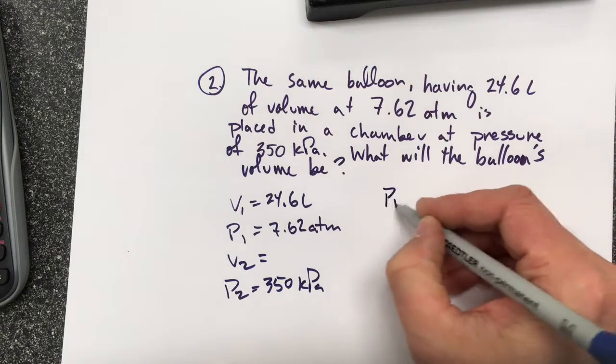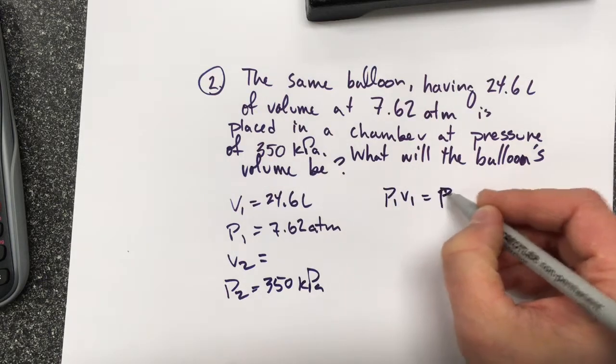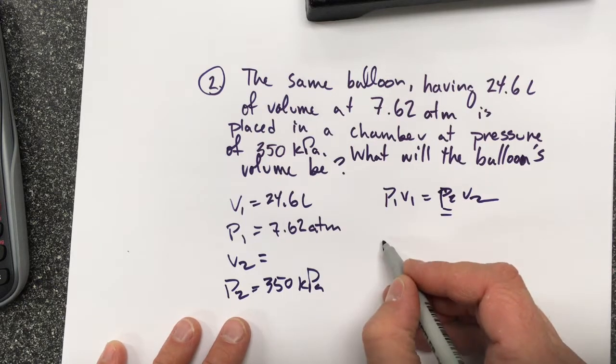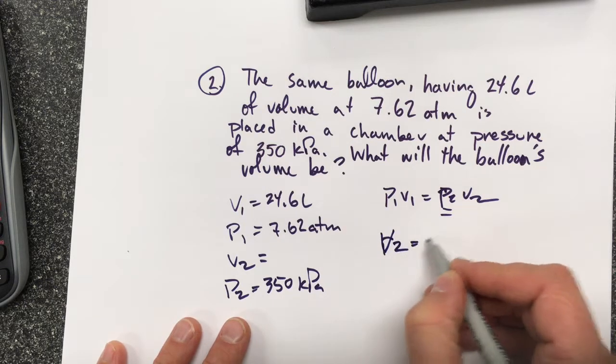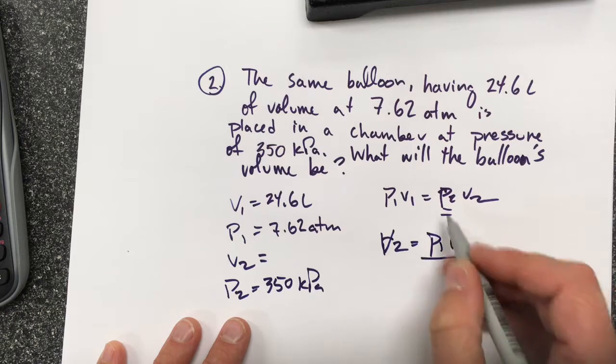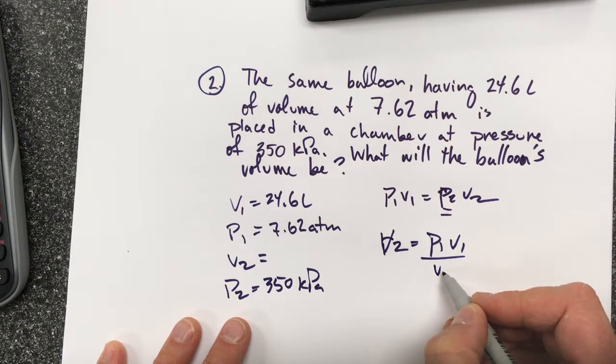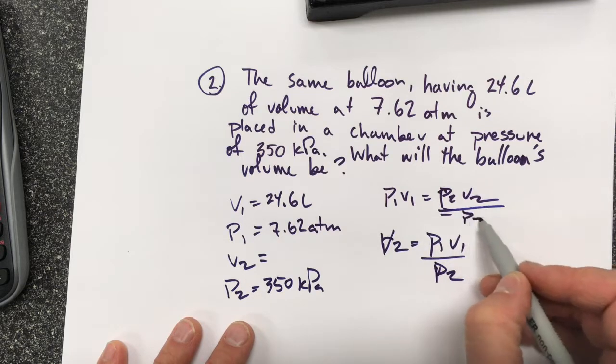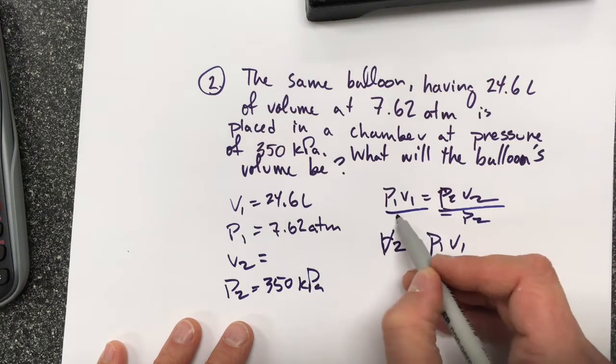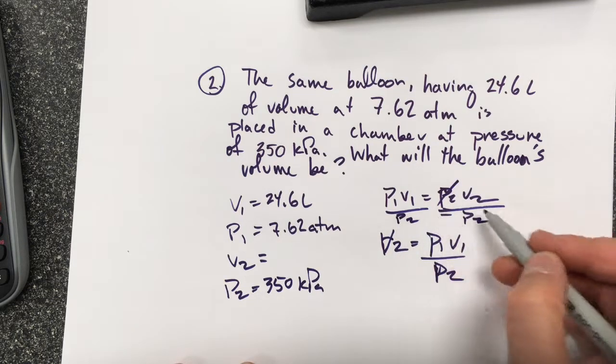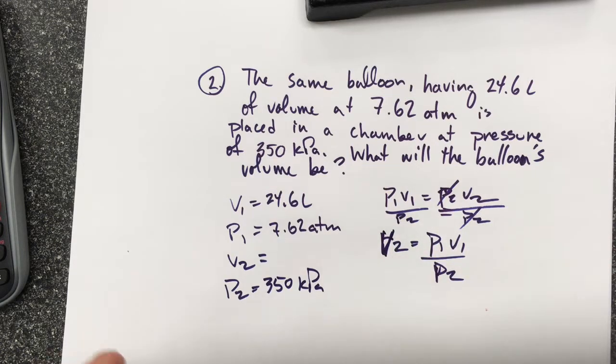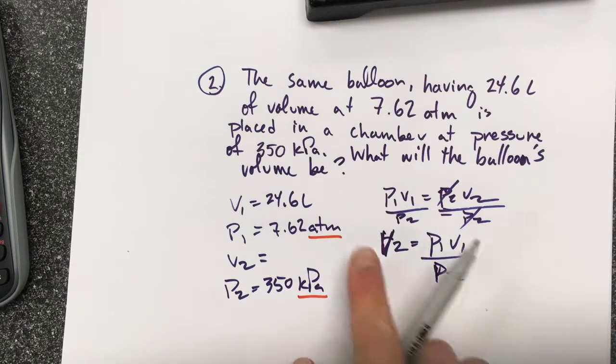Now the challenge here is, when I do my P1V1 equals P2V2, and I'm solving for V2 this time, it'll be V2 equals P1V1 over P2. I'm dividing both sides by P2. So my P2s cancel out.